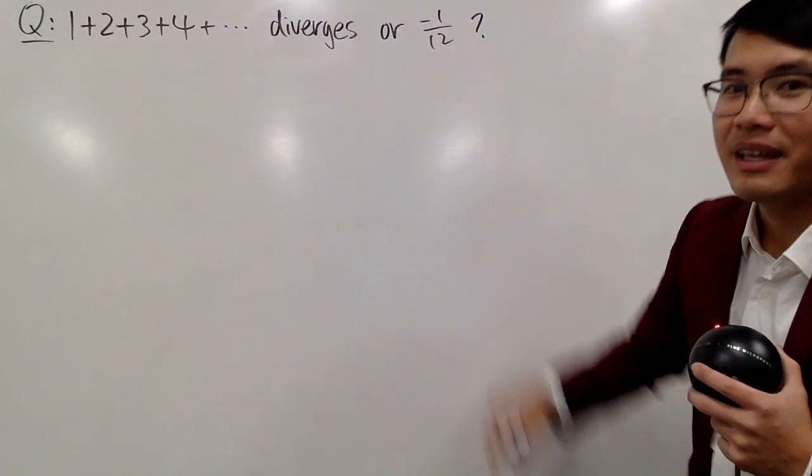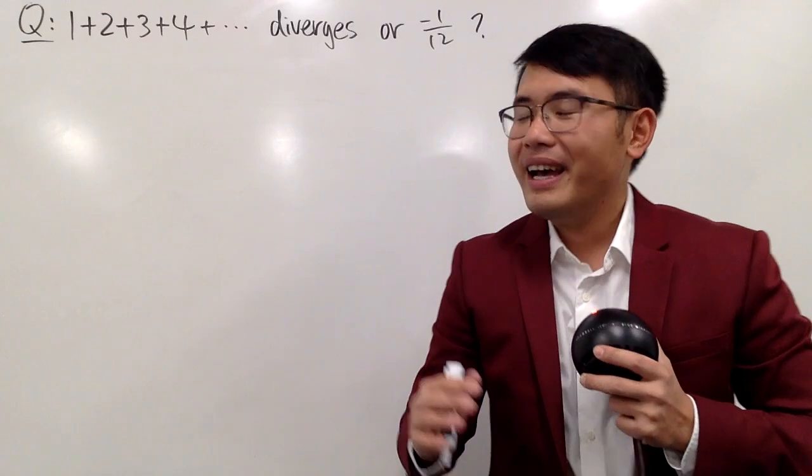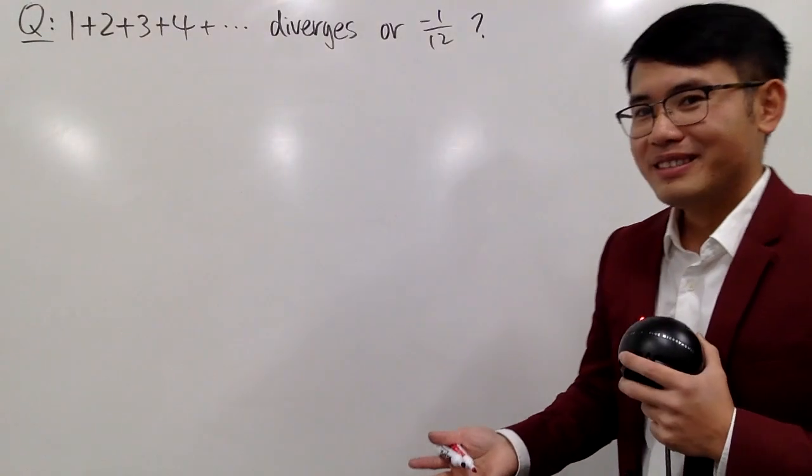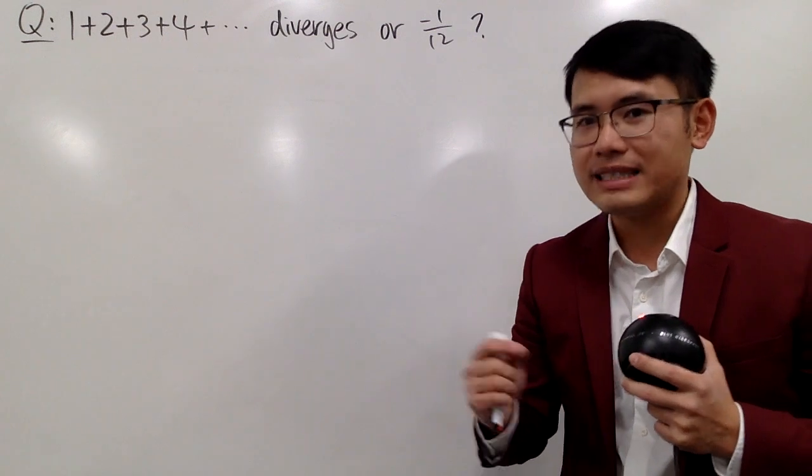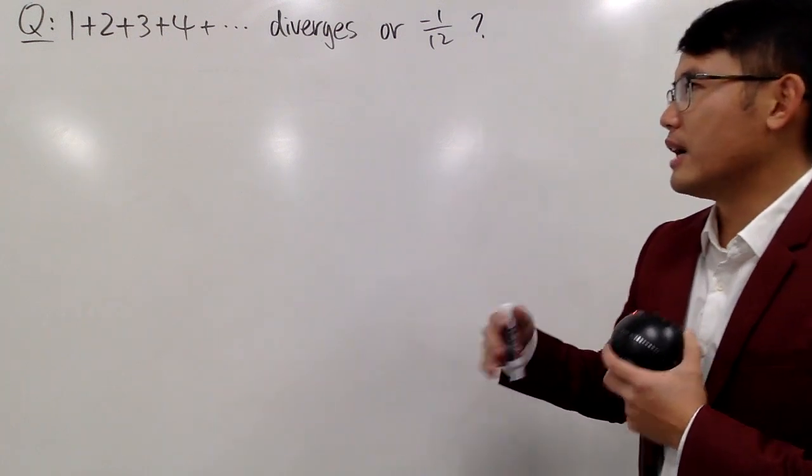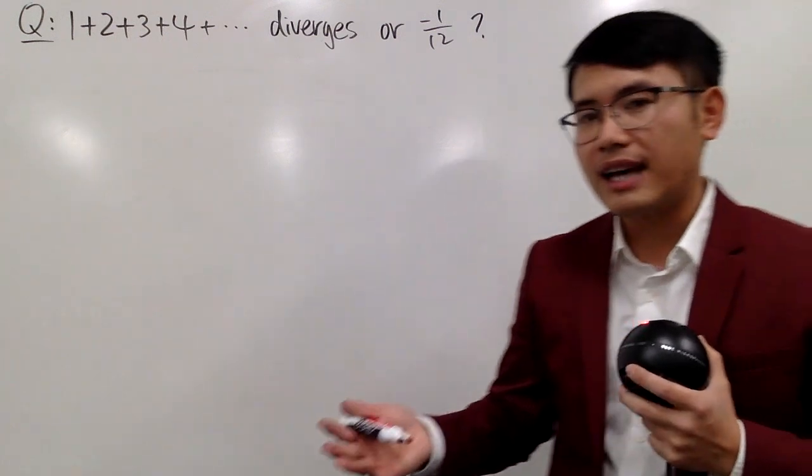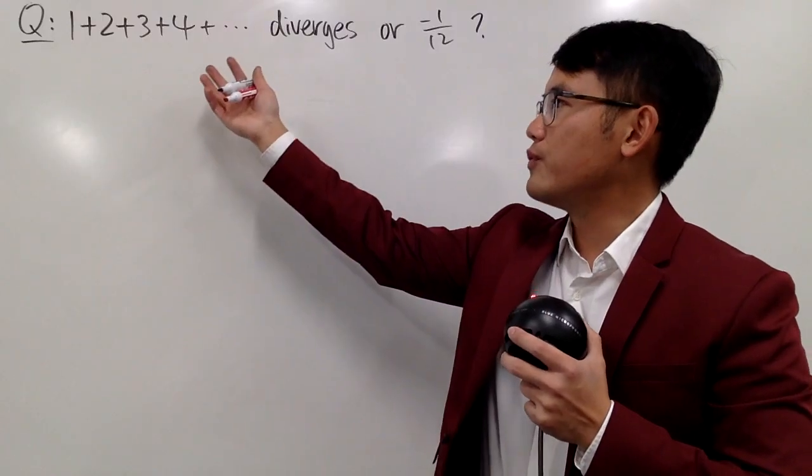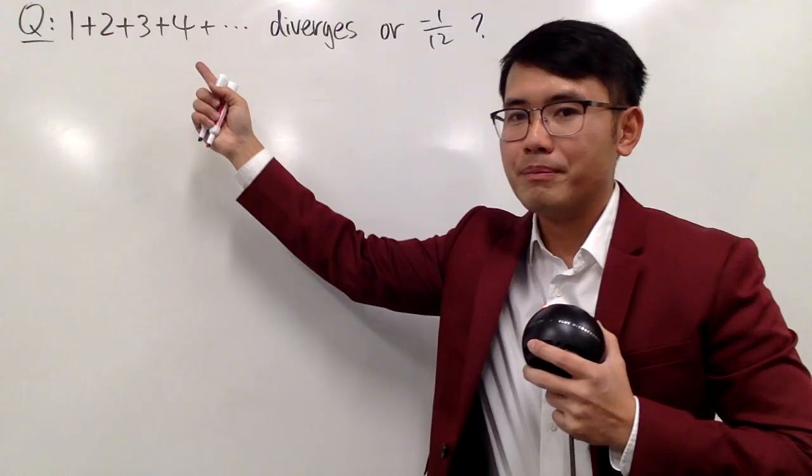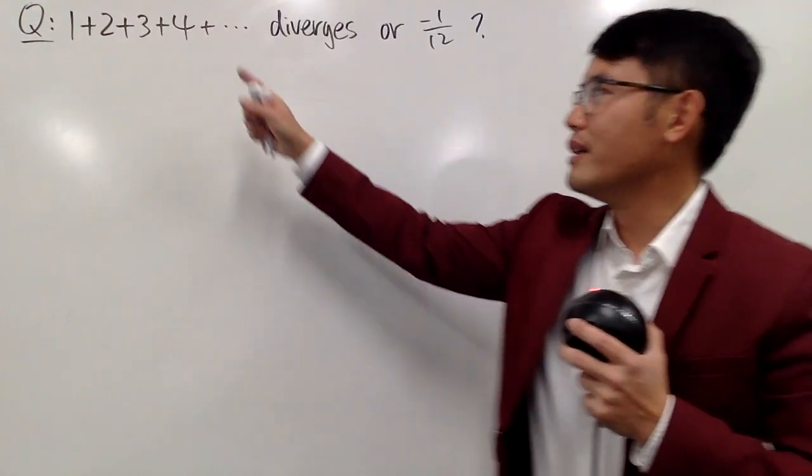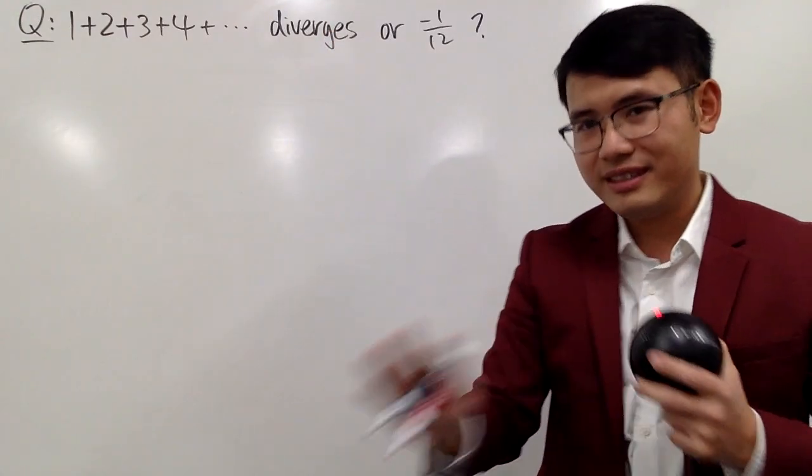And perhaps you can blame numberphile for the negative 1 over 12. If I have to answer this question, it will be depending on which class I'm teaching. If I'm just teaching like an algebra or a calculus class, I would just say 1 plus 2 plus 3 plus 4 plus dot dot dot, the sum is infinity, therefore this diverges.